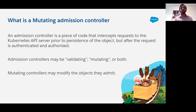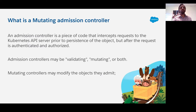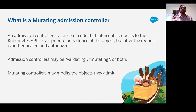So what is an admission controller? An admission controller is a piece of code that intercepts requests to the Kubernetes API server prior to the persistence of the object, but after the request is authenticated and authorized. Admission controllers may be validating, mutating, or both. Mutating controllers may modify the object they admit. Mutating admission controllers are a very popular mechanism for injecting sidecars in Kubernetes, and that's what we are using for our sidecars.